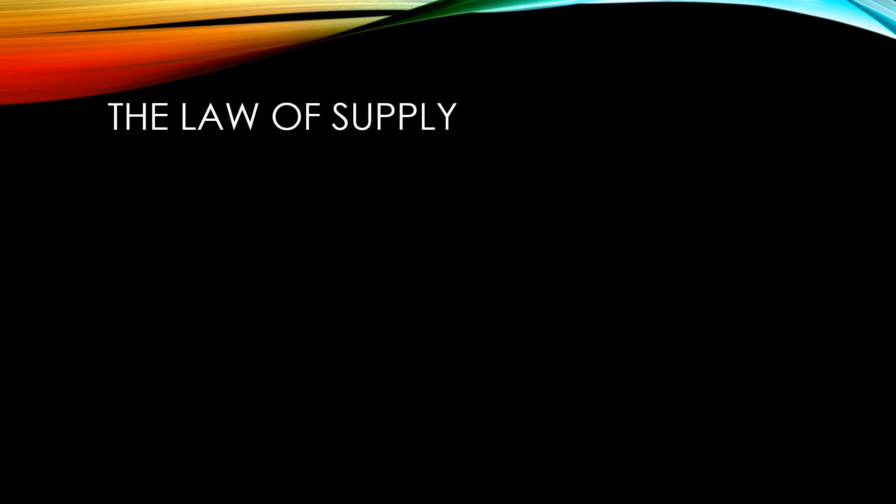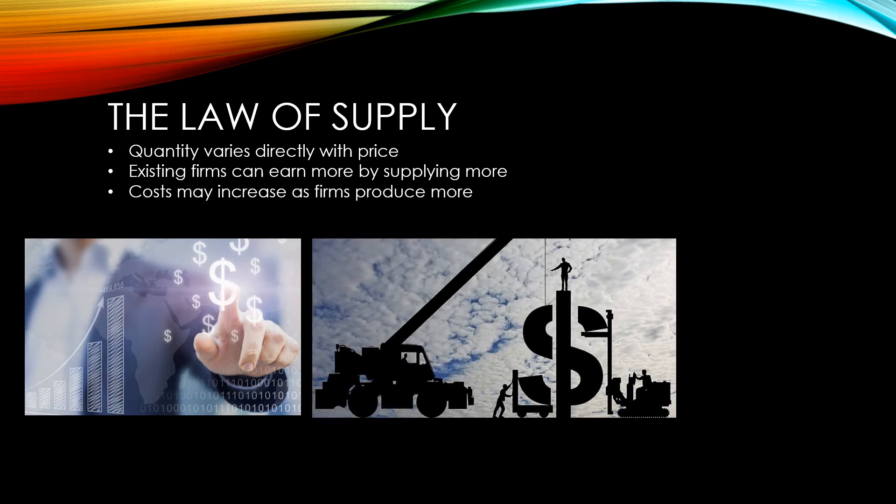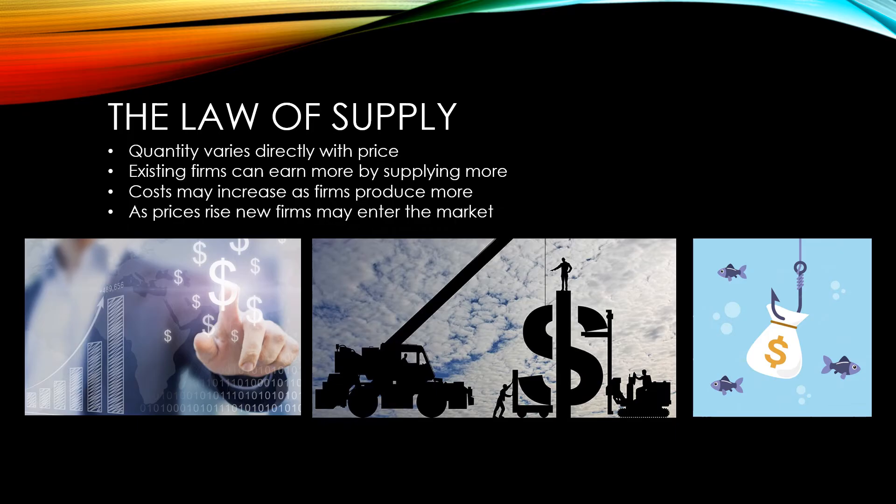The law of supply states that quantity varies directly with price. This holds true because as the price increases, existing firms can earn more by supplying more so they're willing to. As firms try to increase their production, costs may increase so they will require a higher price in order to justify those costs. A firm might need a larger factory or a bigger office for instance. As the price of a product rises, new firms will be attracted to the market that previously would have thought that it didn't earn enough money to warrant their attention.